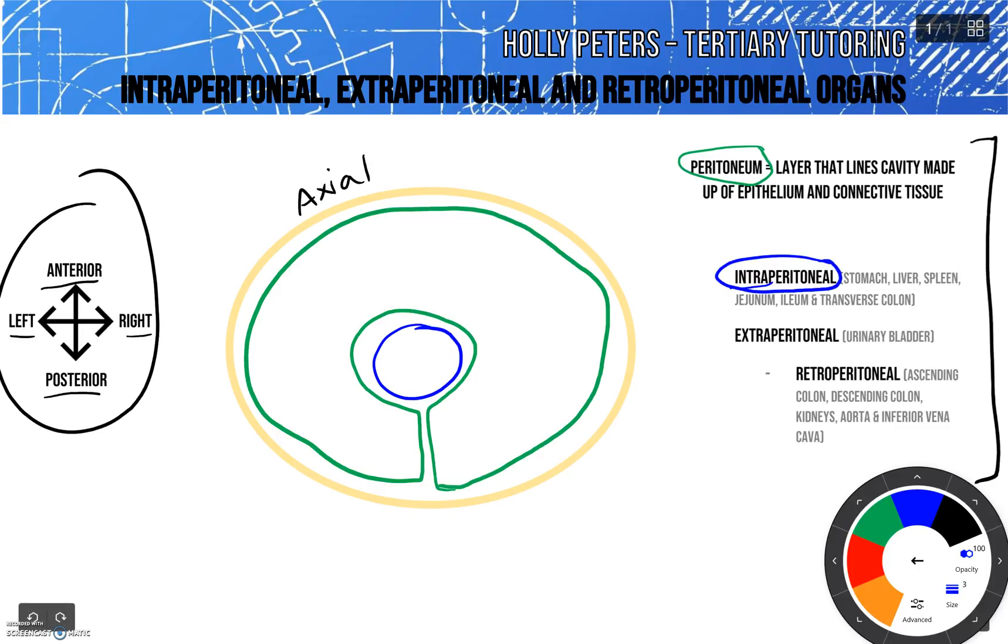Examples of these types of organs include the stomach, liver, spleen, jejunum, ileum and transverse colon.